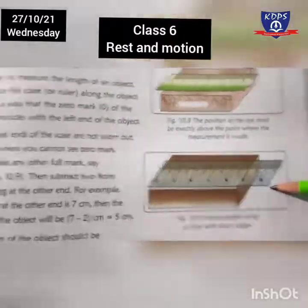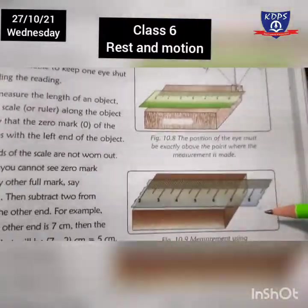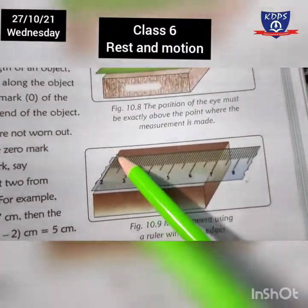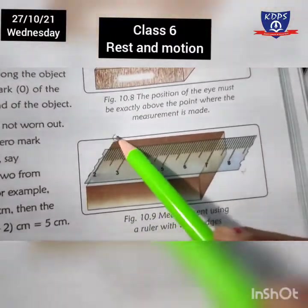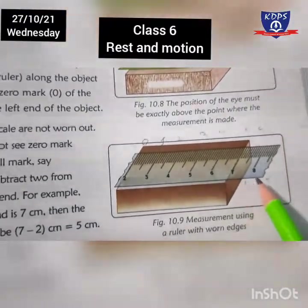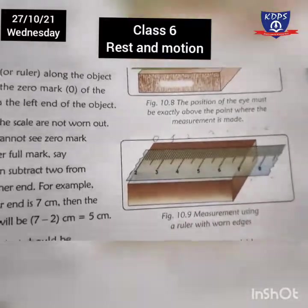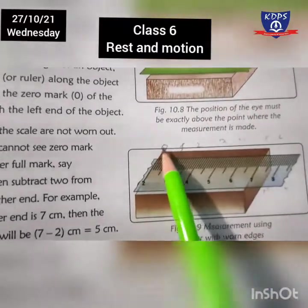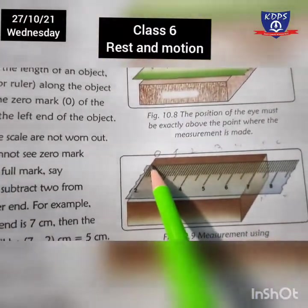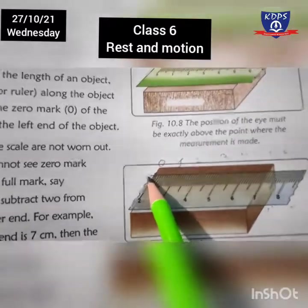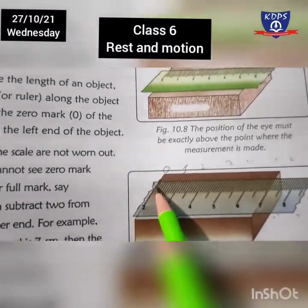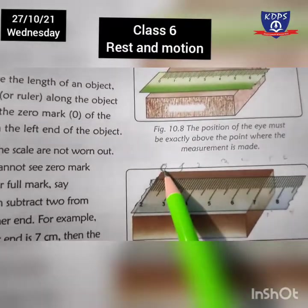We have to consider the starting point: 0, then 1, 2, 3, 4, 5, 6, and so on. If the scale is broken from any end, in that case we still have to consider the starting point 0. The reading starts from there — do not start from the corner end. The reading starts from the zero mark.